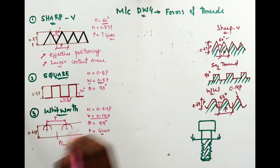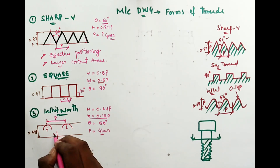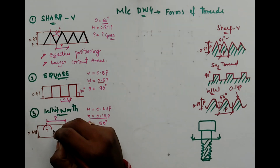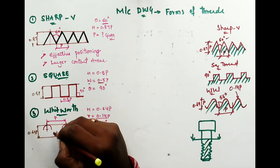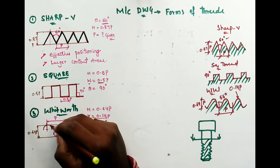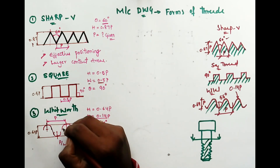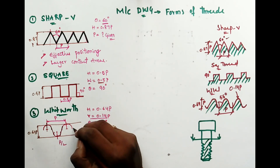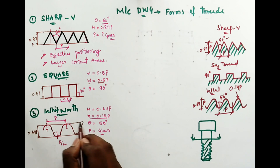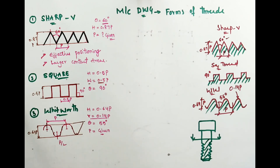Darken the profile with HB pencil. The resulting profile maintains an angle of 55 degrees and a height of 0.64P. Show all the calculations beside the drawing — the radius R, height, and pitch. Without these calculations the drawing is incomplete. You need to show all calculations beside the drawing at all times.